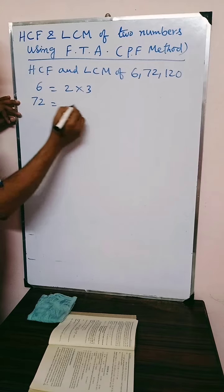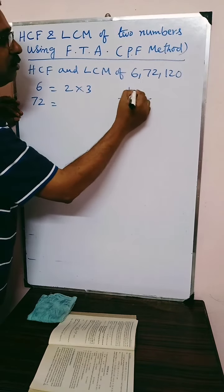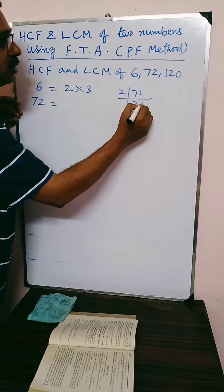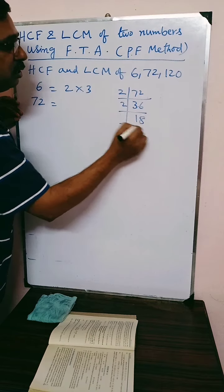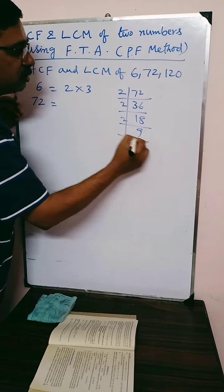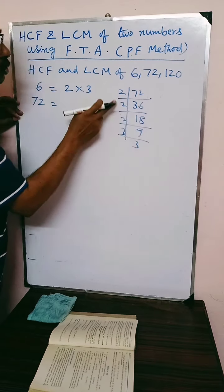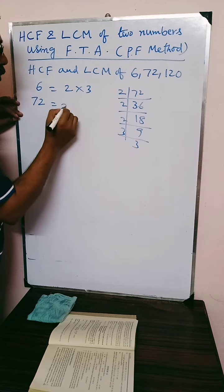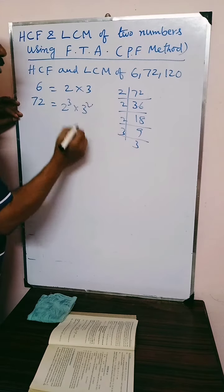And 72, you have to do by short division like this: 2 into 36, 2 into 18, 2 into 9, and 3 into 3. That is 2 into 2 into 2, 2 cubed multiplied by 3 into 3, 3 squared.